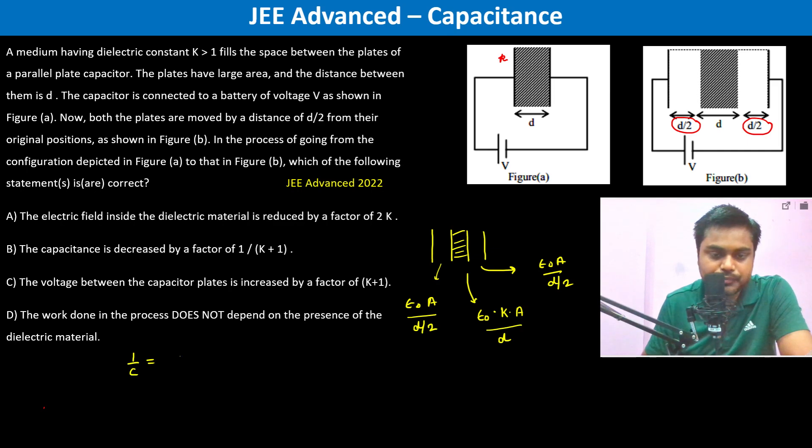Because they are in series, 1/C equals 1/C₁ plus 1/C₂ plus 1/C₃, which equals d/(2ε₀A) plus d/(kε₀A) plus d/(2ε₀A), which equals d/(ε₀A) times (1 + 1/k).